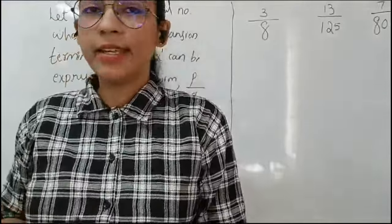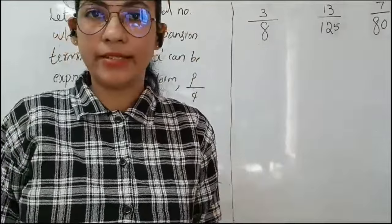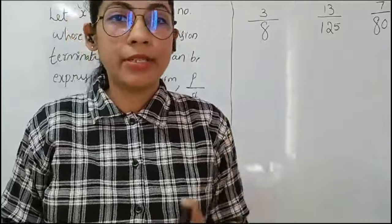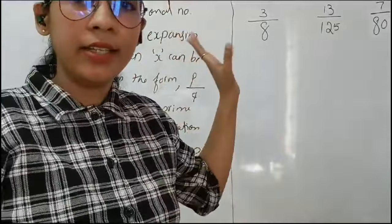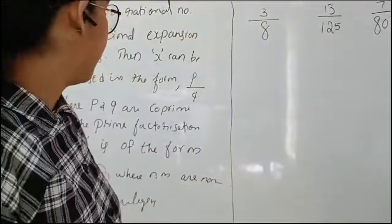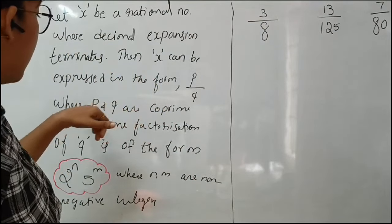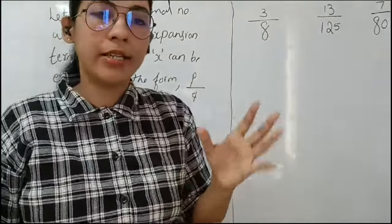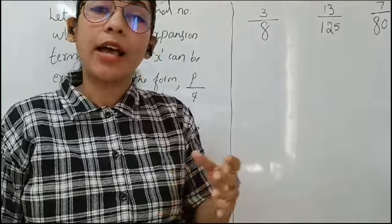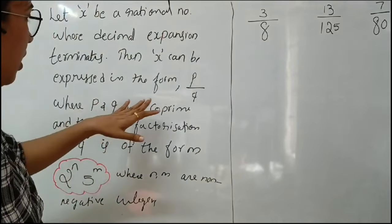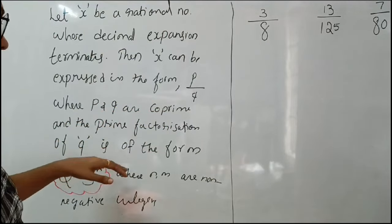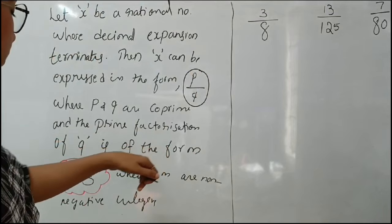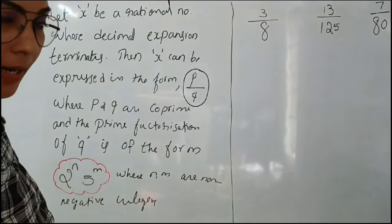In this theorem, X is a rational number whose decimal expansion terminates. A rational number can be represented in the form P by Q — we already discussed this in the last class. There is one more condition: P and Q are co-prime, meaning two numbers are co-prime if they have no common factors other than one. The prime factorization of Q is of the form 2 to the power N times 5 to the power M, where N and M are non-negative integers.